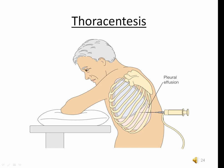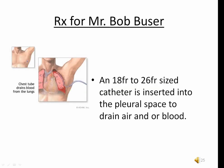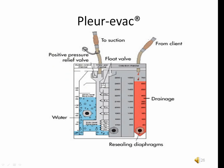Bob Buser has a tension pneumothorax, exhibited by extreme dyspnea and tracheal deviation to the unaffected side. When air builds up, the opposite chest gets compressed and you can actually see the trachea being pushed to the opposite side by the air buildup. Bob needs immediate treatment — an immediate thoracentesis will be performed, followed by chest tube catheter insertion. The catheter is attached to an underwater seal drainage system with three compartments: one to collect fluid, one to collect air, and one for suction to increase the pull of fluid and air out of the pleural space. A common trade name for this system is the Pleurevac.